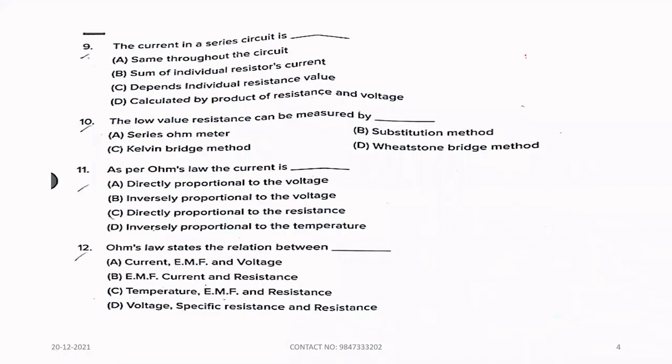Ninth question, the current in a series circuit is option A, same throughout the circuit. Tenth question, the low value resistance can be measured by dash. Option C, Kelvin's double bridge or Kelvin's bridge method.